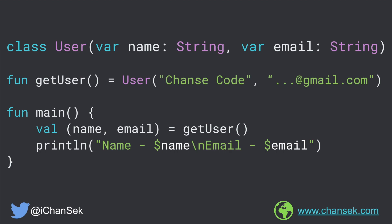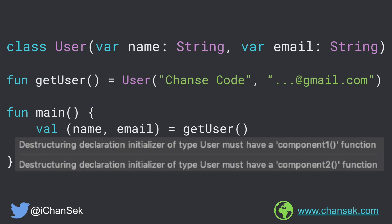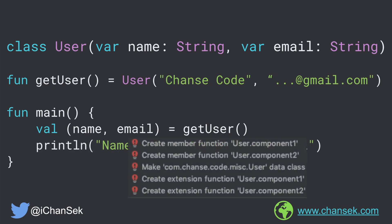Now moving forward, this will still fail, and the error the compiler will throw is this. Notice that the Kotlin compiler expects two methods called component1 and component2 to be part of the User class. If you are using IntelliJ IDEA, by pressing Alt+Enter you can find all the options to fix that. The solutions are to create functions like component1 and component2 inside the User class, or create them as extension functions.